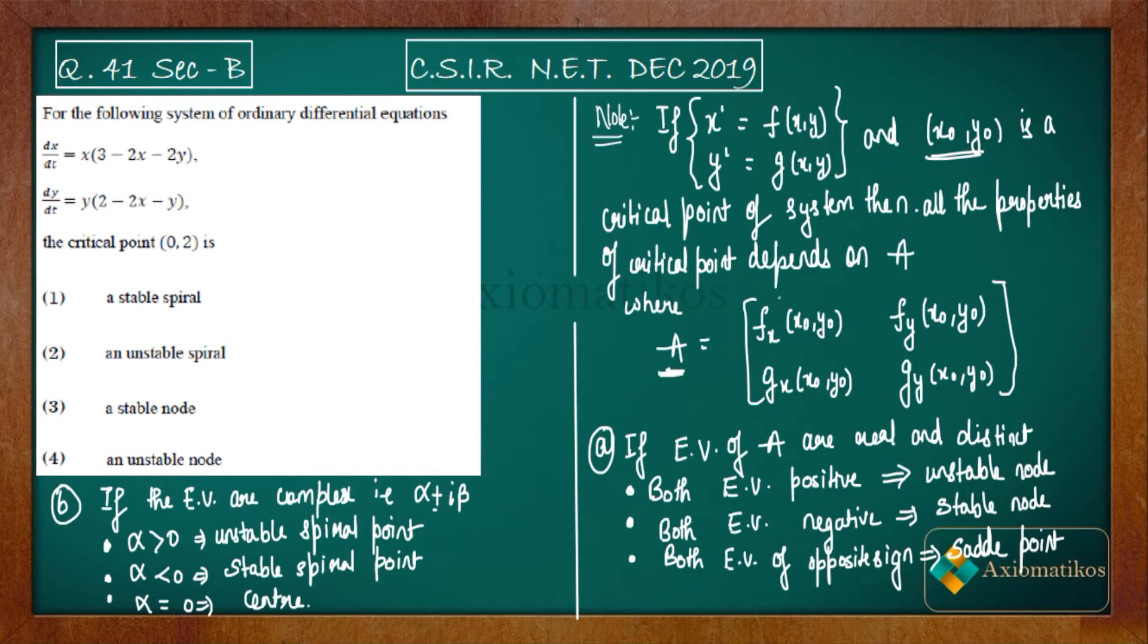So calculate this matrix and after calculating, find out its eigenvalues. If eigenvalues of this matrix are real and distinct and both eigenvalues are positive, then the critical point will be unstable node. If both eigenvalues are negative, then stable node. If both eigenvalues are of opposite sign, then saddle point.